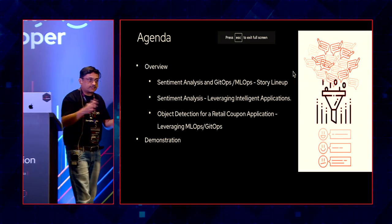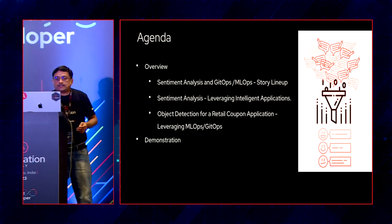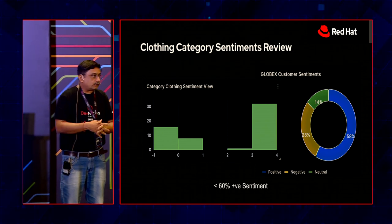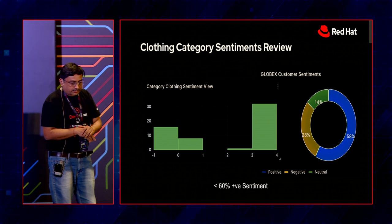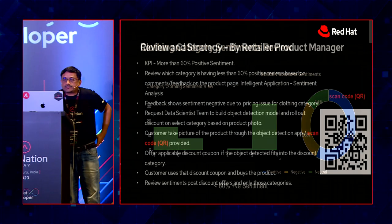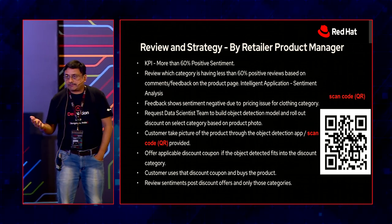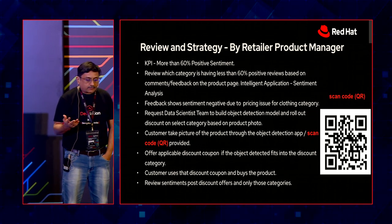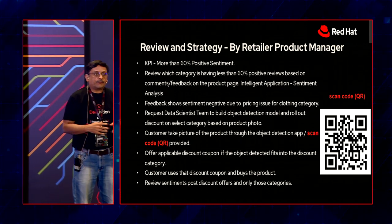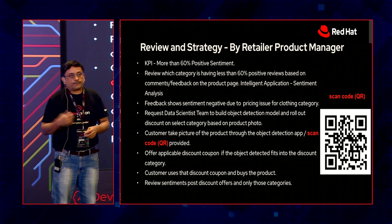As Jay mentioned, we have sentiment analysis. For a specific product set in a clothing category, if the feedback is not good — the graph shows less than 60% positive sentiment, as shown in the Grafana dashboard — it doesn't look good from the product manager's point of view. The KPI for the product manager is to have more than 60% positive sentiment. So they review which category has less than 60% positive responses. The sentiment analysis shows that, and the request goes to the data scientist team to come up with a strategy — in this case, the feedback says the product is costly, so they introduce discounts.